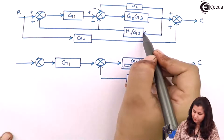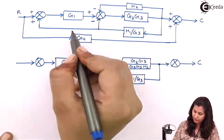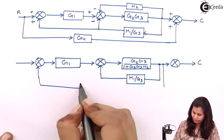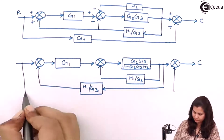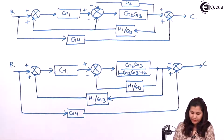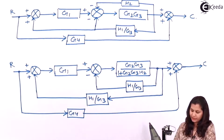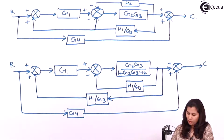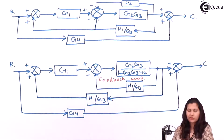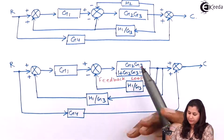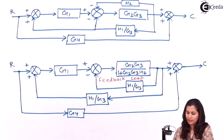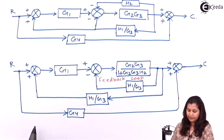We can split this block — H1/G3 is being applied to this summing point and also to this summing point, so we can break it. These two blocks are in feedback with each other, forming a feedback loop. We reduce this by applying the feedback rule: the resultant transfer function is Gs divided by 1 plus Gs·Hs, because it is a negative feedback loop.